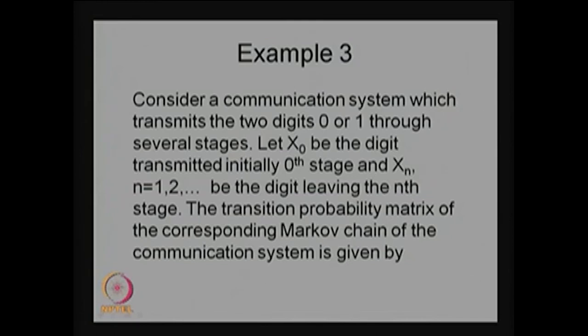Each stage is a random variable and you have a collection of random variables over the stages, so it is a sequence of random variables. This forms a stochastic process, and specifically it is a discrete time discrete state stochastic process because the possible values of x_n are 0 or 1. Therefore the state space is {0, 1}.